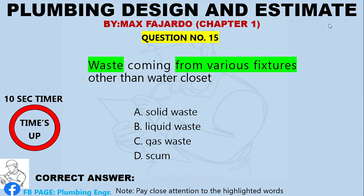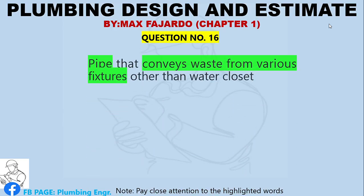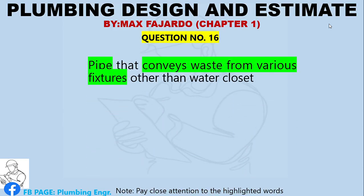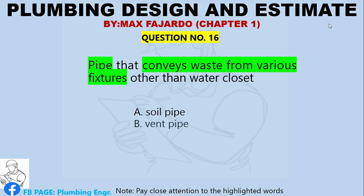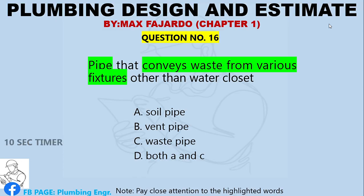Correct answer: letter B, liquid waste. Question Number 16. Pipe that conveys waste from various fixtures other than the water closet. A. Soil pipe. B. Vent pipe. C. Waste pipe. D. Both A and C.